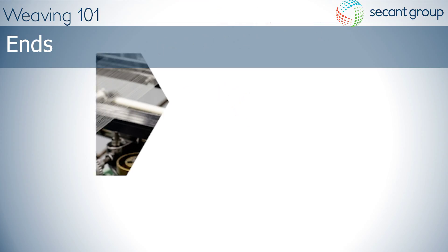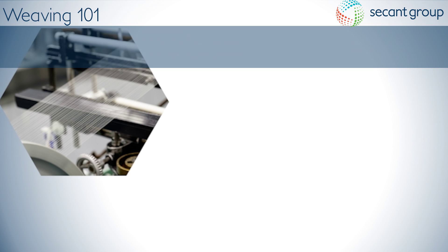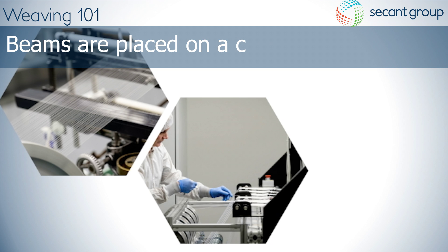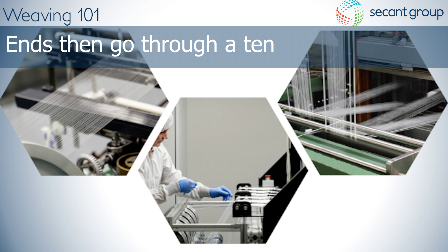We start the weaving process with a warp beam with a predetermined number of ends on it. The warp beam is placed on a creel, and ends are pulled through a tension bar, then through the harness so they can be entered into the harness.